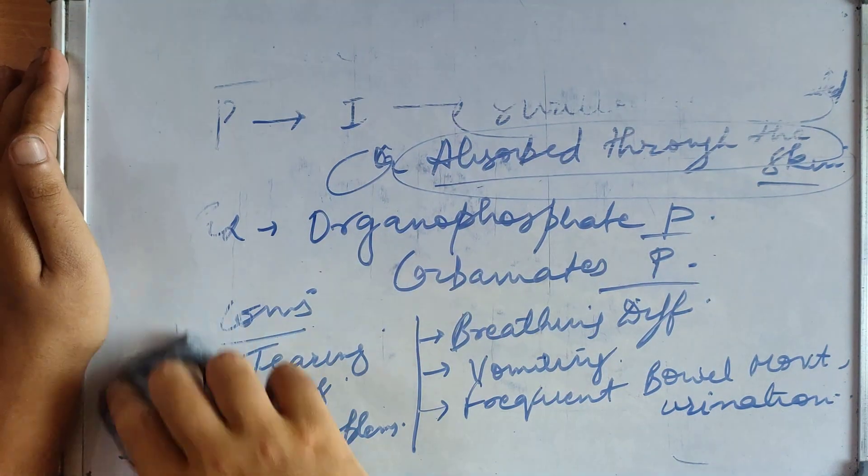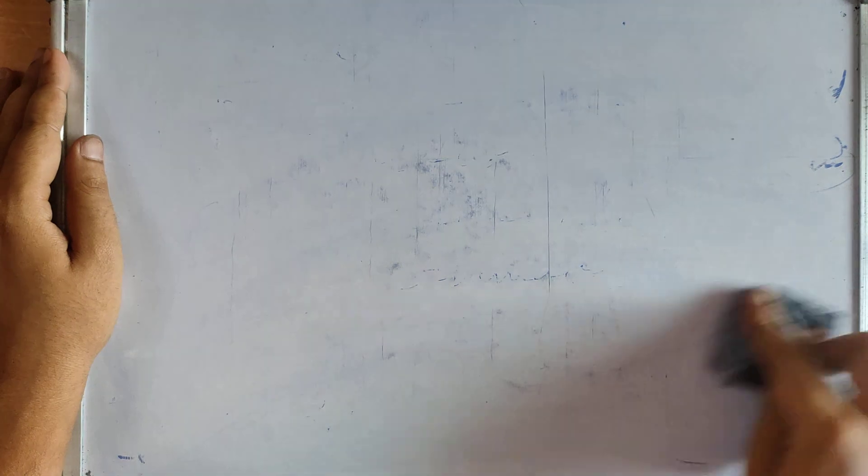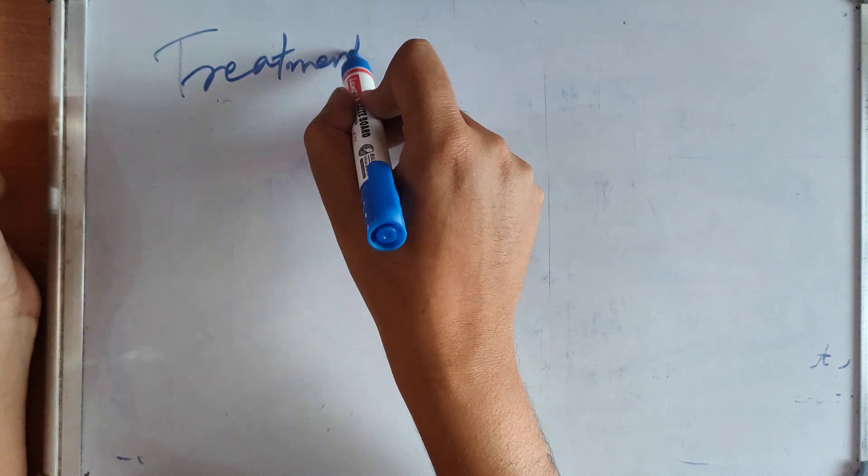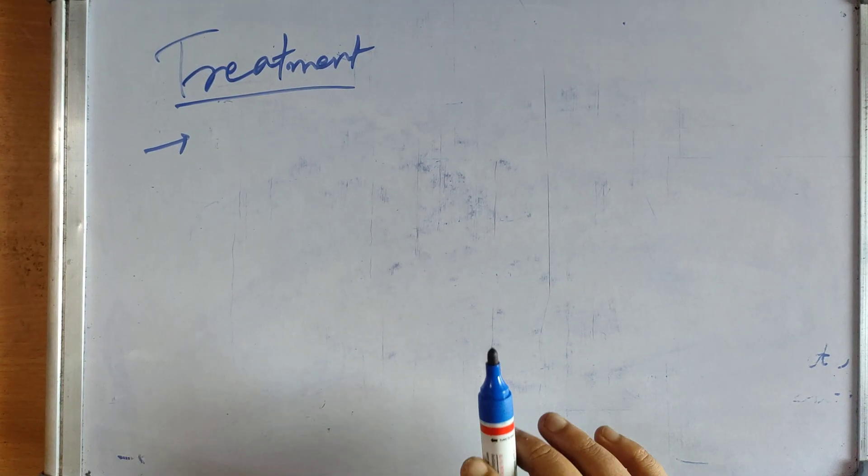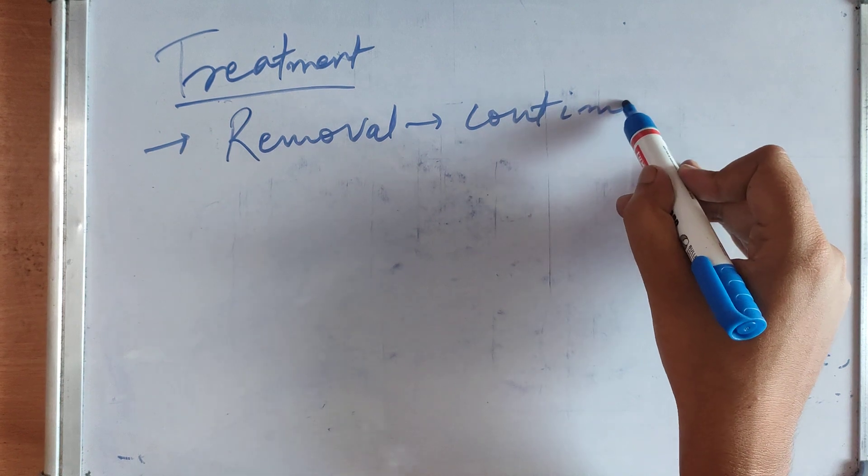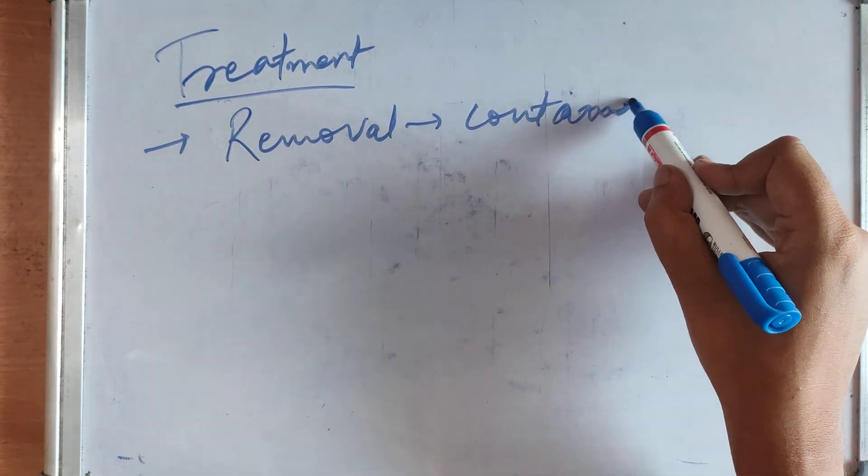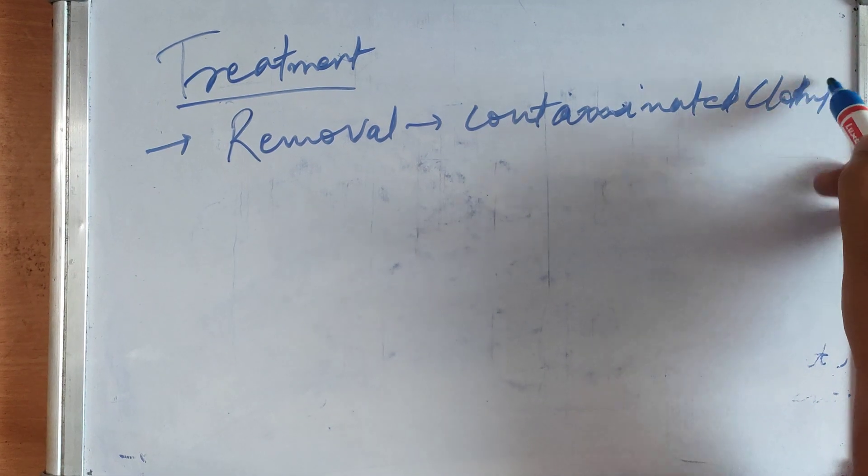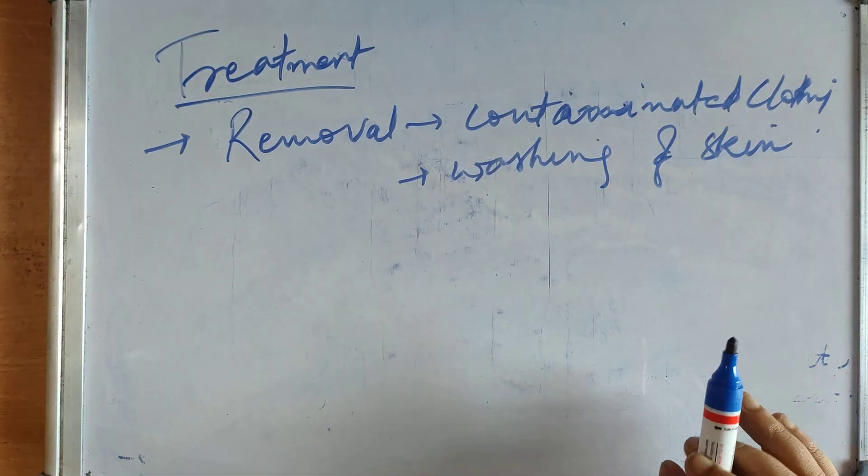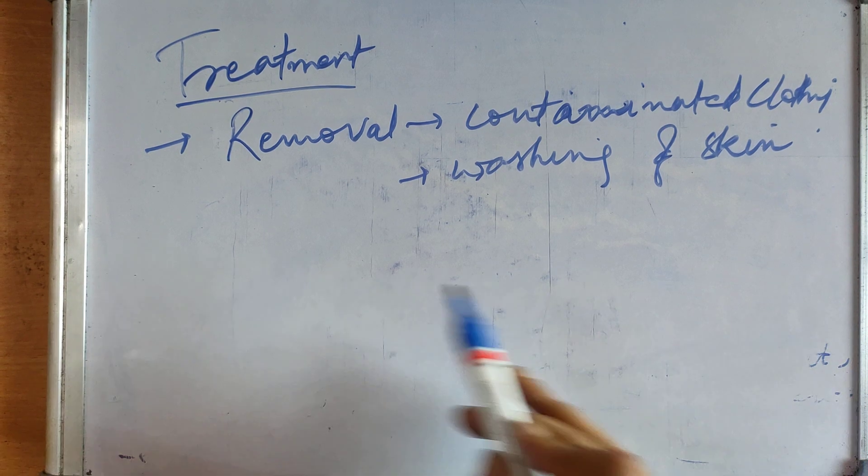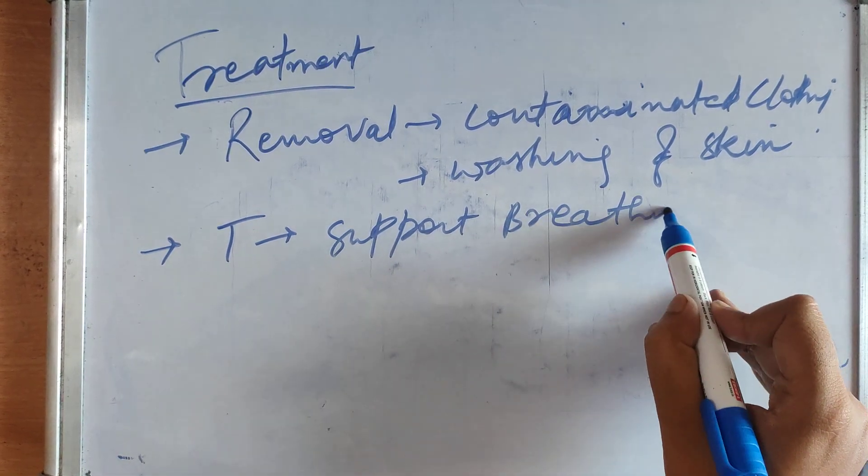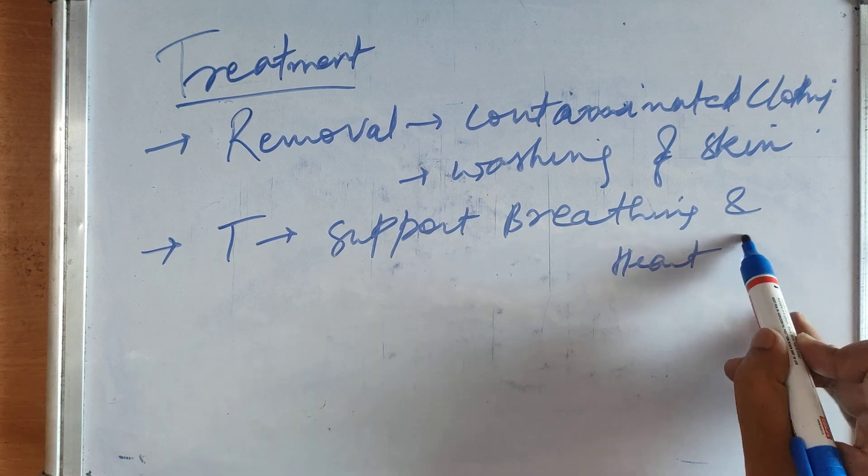Now, what are its treatment? We should know it. How will you treat this insecticide poisoning? It was asked in previous years, so we should know it. Some common treatments: removal of contaminated clothing and washing of skin, treatment to support breathing and heart functions if there are breathing difficulties.